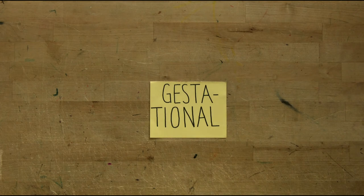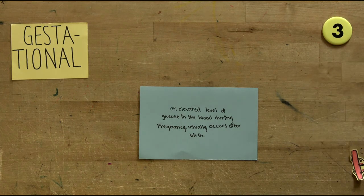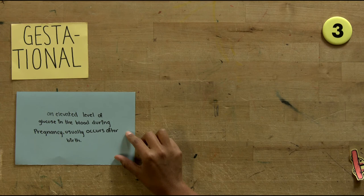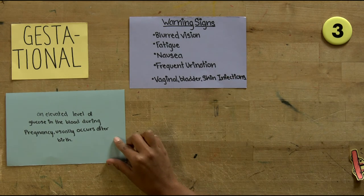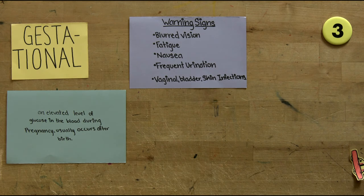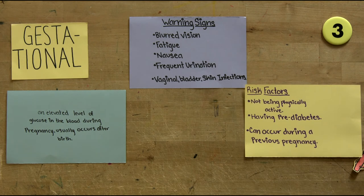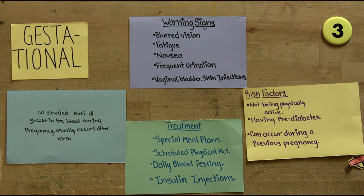Gestational diabetes involves an elevated level of glucose in the blood during pregnancy, usually occurring after birth. Warning signs include blurred vision, fatigue, nausea, frequent urination, and vaginal, bladder, and skin infections. Risk factors include not being physically active and having pre-diabetes, which can also occur during a previous pregnancy. Treatment includes special meal plans, scheduled physical activity, daily blood testing, and insulin injection.